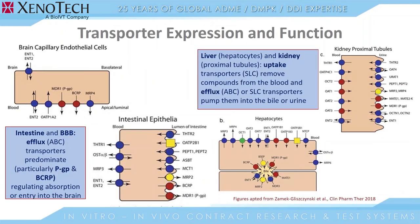Drug transporters are found in all cells throughout the body. However, when looking at different tissues, we tend to focus on certain types of transporters. For example, when considering the intestine and the blood-brain barrier, the efflux transporters, particularly PGP and BCRP, are important because they regulate the absorption or entry of drugs into the brain or into the cells of the intestine. When looking at the liver or kidney cells, the uptake transporters are important to consider because they remove compounds from the blood. Also, the efflux transporters, and in some cases other uptake transporters, are involved in pumping those compounds out into the bile or the urine for excretion.